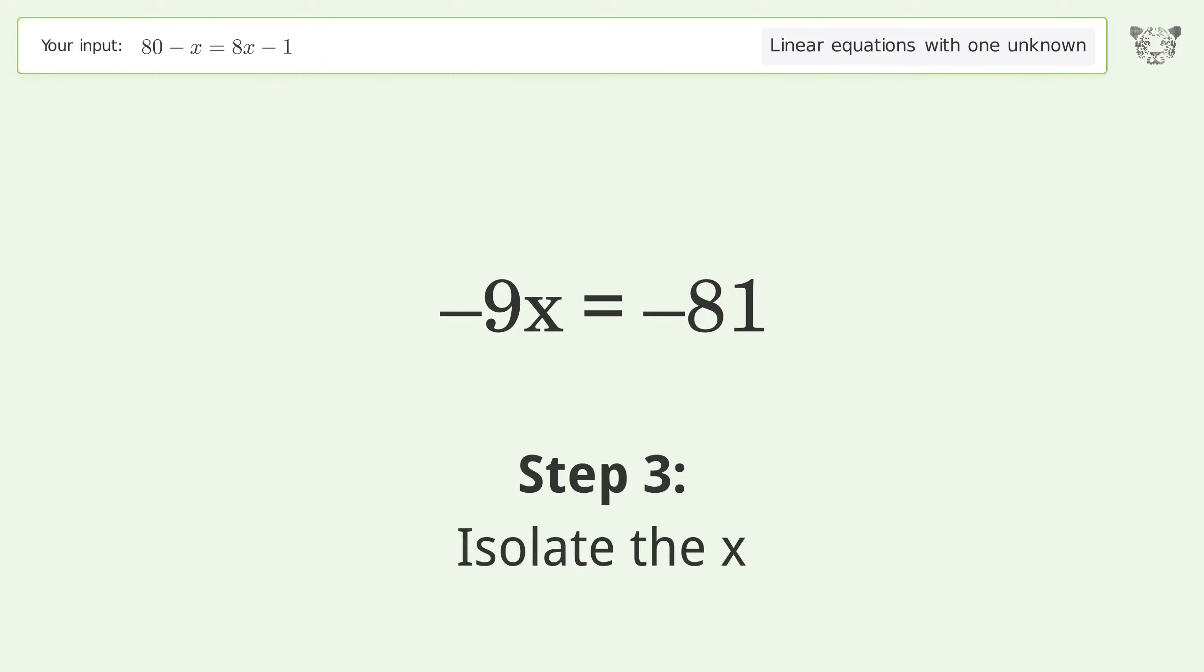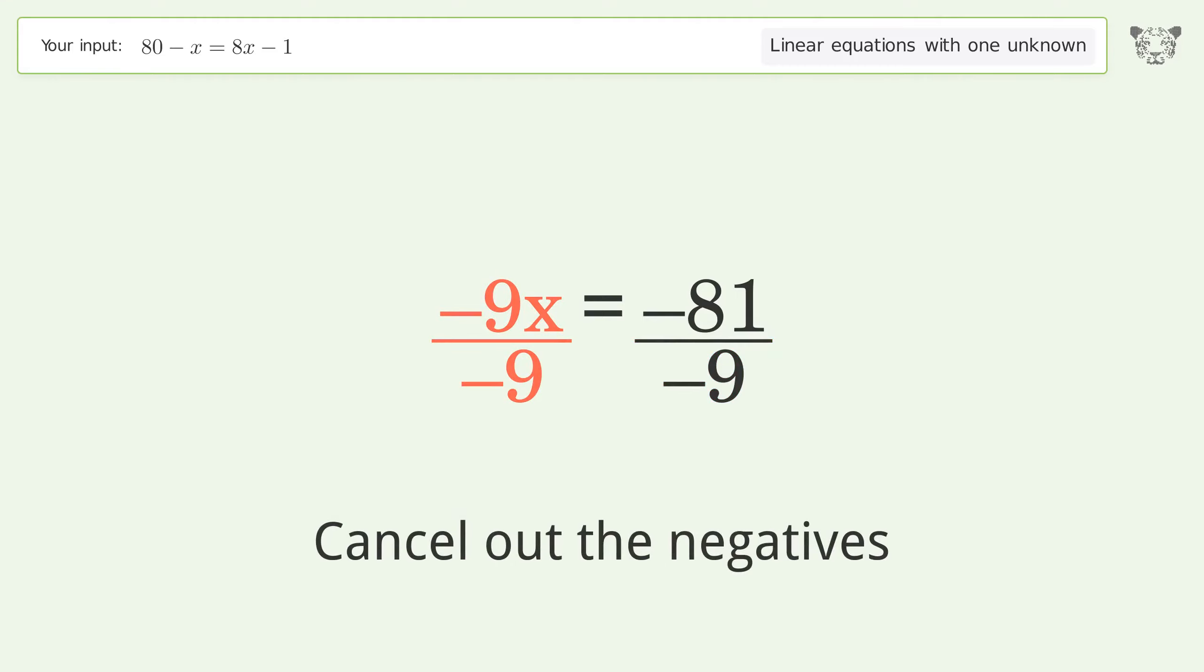Isolate the x. Divide both sides by negative 9. Cancel out the negatives. Simplify the fraction. Cancel out the negatives.